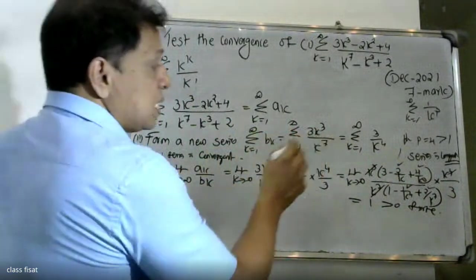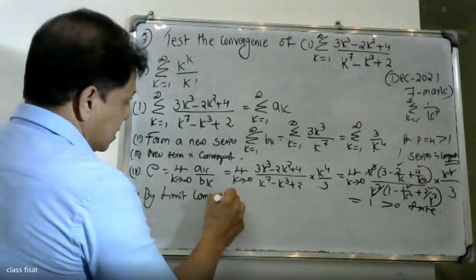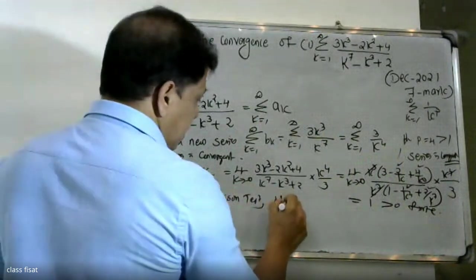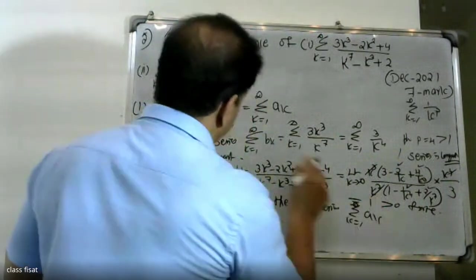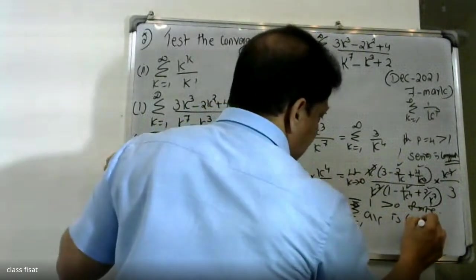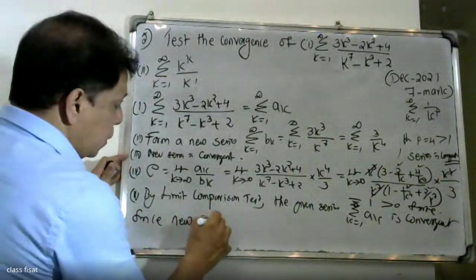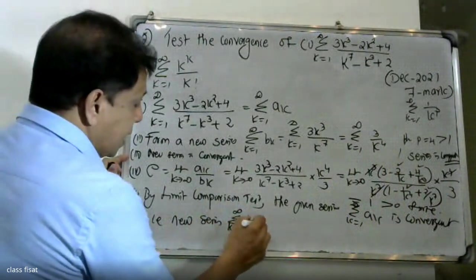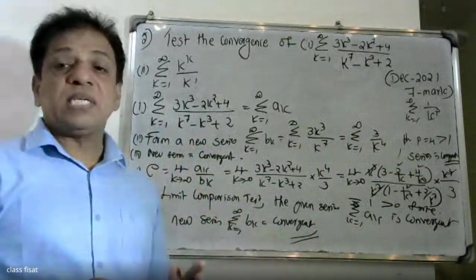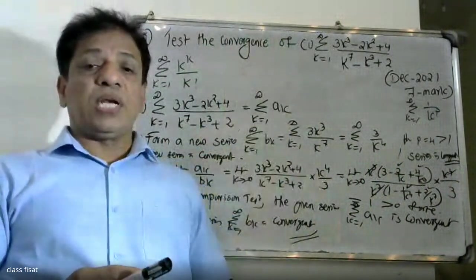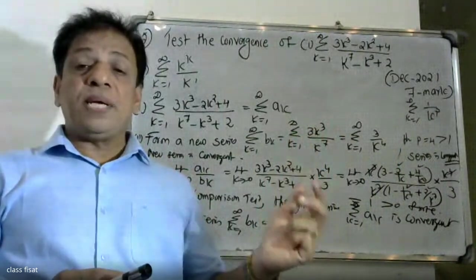Therefore, by the limit comparison test, the given series Σ from k=1 to infinity of aₖ is convergent, since the new comparison series Σ from k=1 to infinity of bₖ is also convergent.